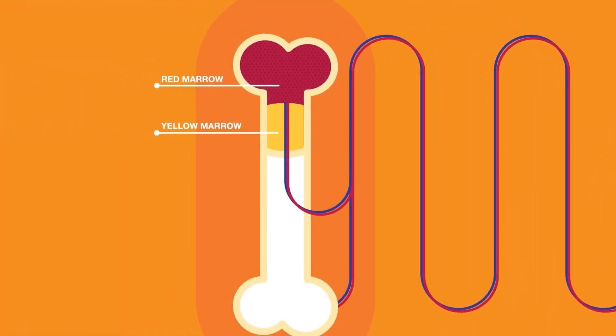All three cell types form in the bone marrow, which is the soft tissue inside your bones.